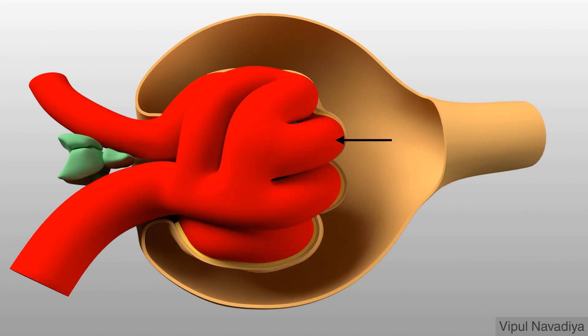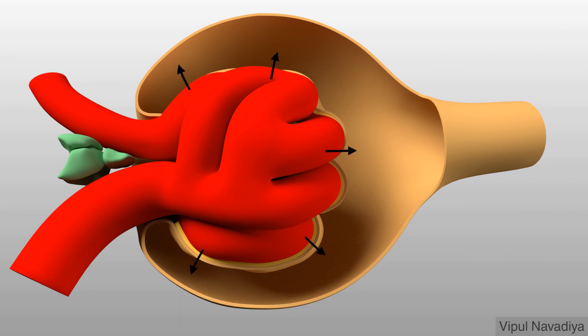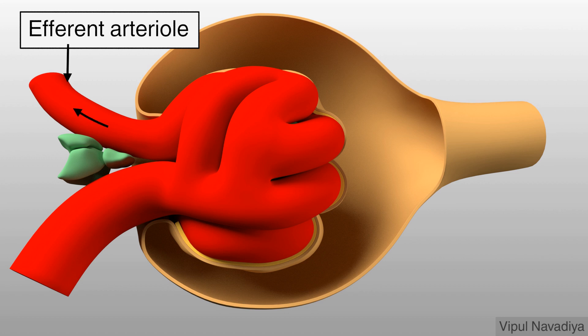Next is the glomerulus. It is a network of branching and anastomosing capillaries. Blood comes in via the afferent arteriole and is filtered here. The filtrate then enters into Bowman's capsule and moves ahead in the tubule for further processing. Remaining blood leaves the glomerulus via the efferent arteriole.